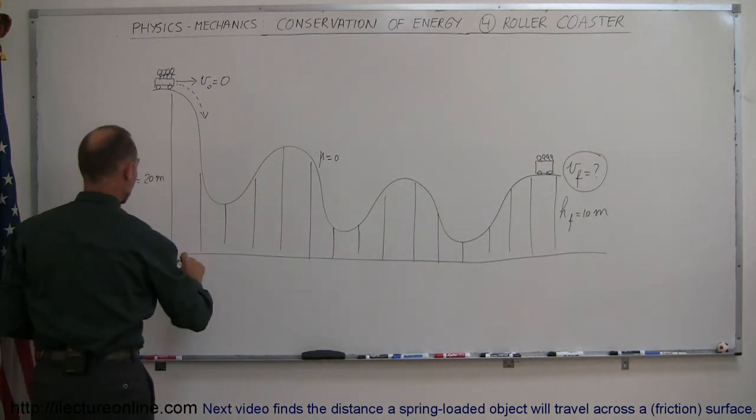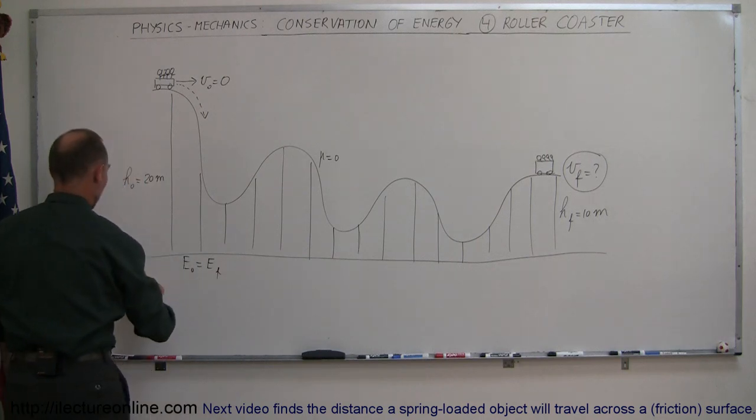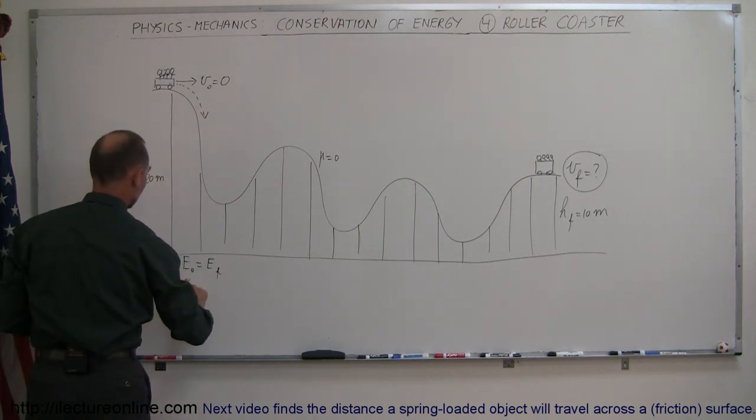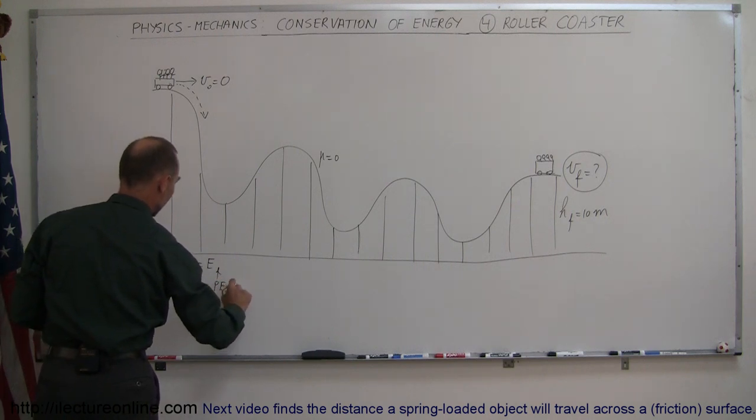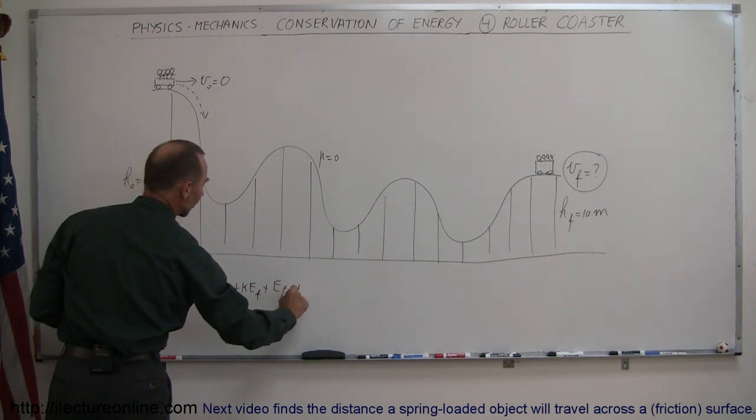And again the equation: energy initial equals energy final, so that we have the work put into the system plus the initial potential energy plus the initial kinetic energy equals the potential energy final plus the kinetic energy final plus any energy lost due to friction.